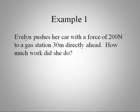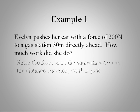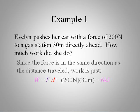This one's pretty straightforward. Since the force is in the same direction as the motion, the work is just the product of the two. So 200 newtons times 30 meters gives us 6,000 or 6 kilojoules.